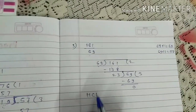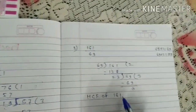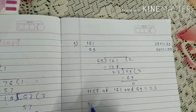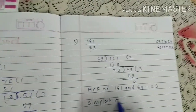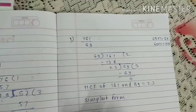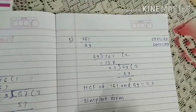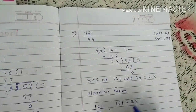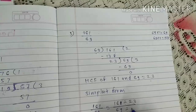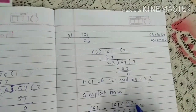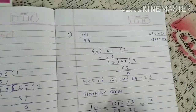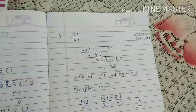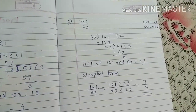So HCF of 161 and 69 is equal to 23. Simplest form: 161 upon 69 equals 161 divided by 23, upon 69 divided by 23. 161 divided by 23 is 7, and 69 divided by 23 is 3. So 7 upon 3 is the simplest form. Understood? Thank you.